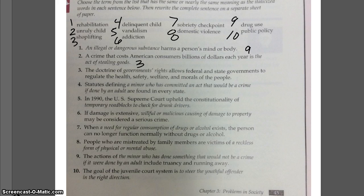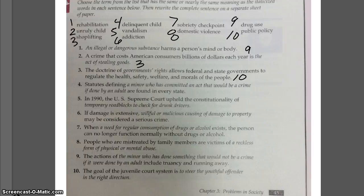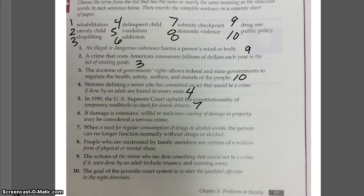Number three: the doctrine of government's rights allows federal and state governments to regulate health, safety, welfare, and morals of people — that is public policy. Statutes defining a minor who has committed an act that would be a crime if done by an adult are found in every state — that is a delinquent child. In 1990, the U.S. Supreme Court upheld the constitutionality of a temporary roadblock to check for drunk drivers — that would be sobriety checks. If damage is extensive, willful, or malicious, causing of damage to property may be considered a serious crime, which is vandalism. When a need for regular consumption of drugs or alcohol exists and the person can no longer function normally without them, he is addicted — addiction.